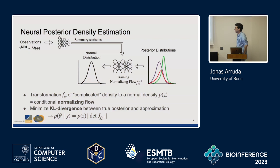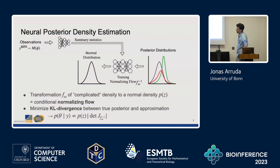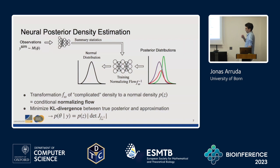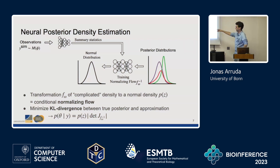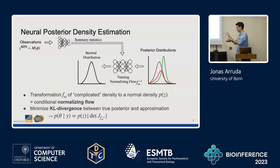Do you think your model can work if you had a subset of your real data observations? I haven't thought about that yet. What you really need during the training phase is a pair of parameters and observations. You could try to infer some of the parameters from your existing data and learn that somehow, but I'm not so sure about that.